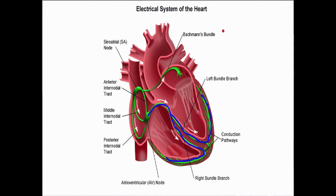When one of the bundle branches is blocked, there's going to be a disruption in that fast, snappy conduction and contraction, and we're going to get a wider QRS and sometimes less cardiac output. Luckily, in right bundle branch block, that isn't nearly as much of a problem as it is in left bundle branch block. So to illustrate it, I'm going to put a block across the right bundle.